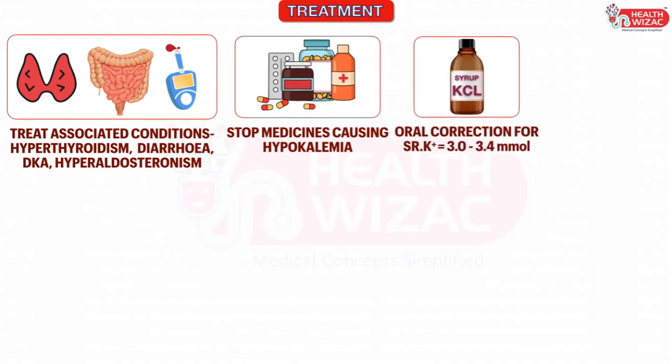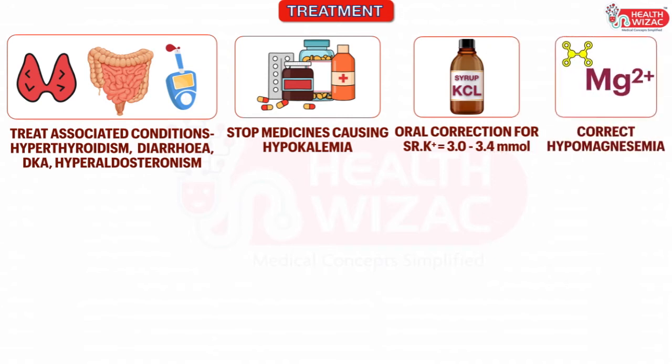Treatment of mild hypokalemia, that is serum potassium between 3 to 3.4, should be done orally through potassium chloride. Hypomagnesemia should be corrected at the earliest.